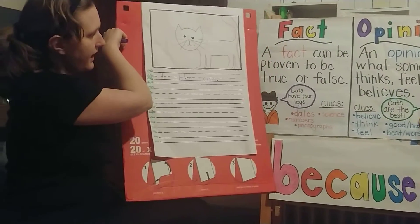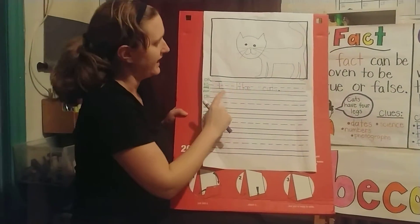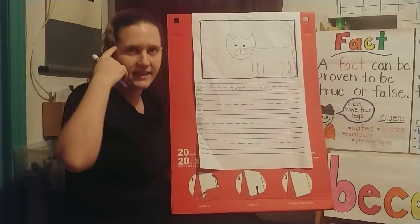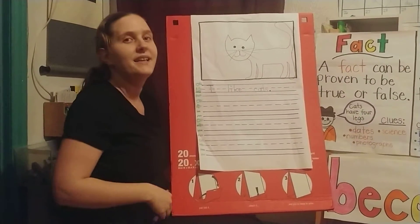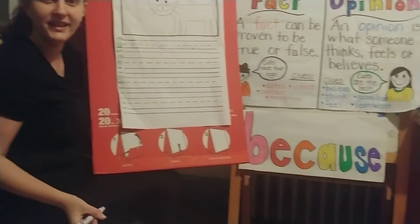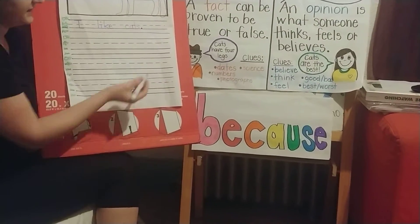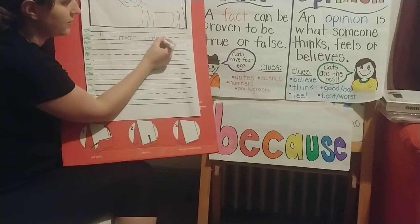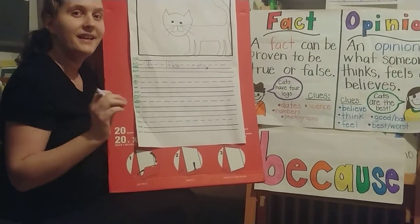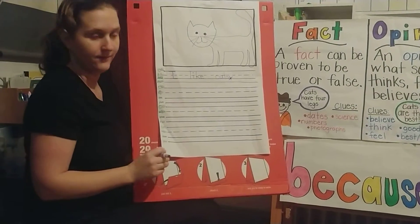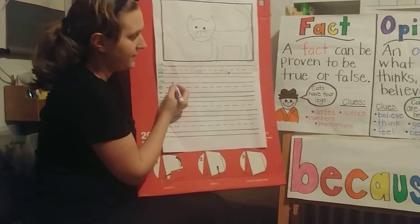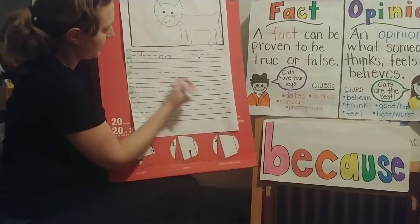Right here I have an opinion. It says I like cats — because, which is true, that's how I think and feel about cats. Now I need to add that fancy big long word, which is because. So I'm actually going to cross off my period, because yesterday I only wrote my opinion. Now I'm giving a reason for my opinion. I'm going to write I like cats because — and you can help me spell it.